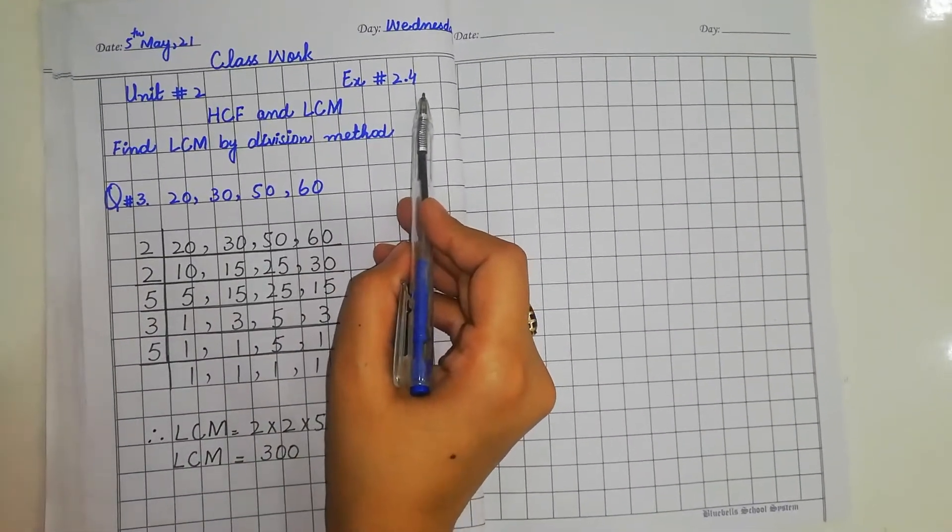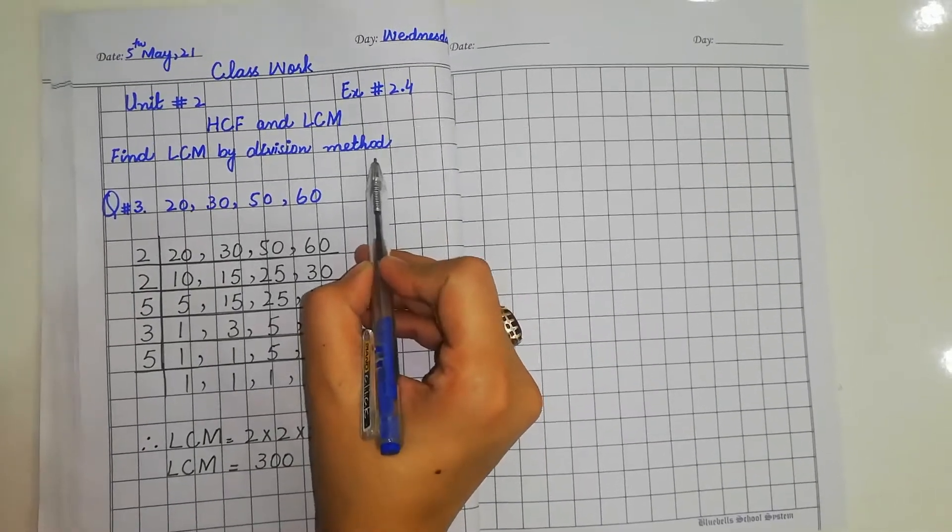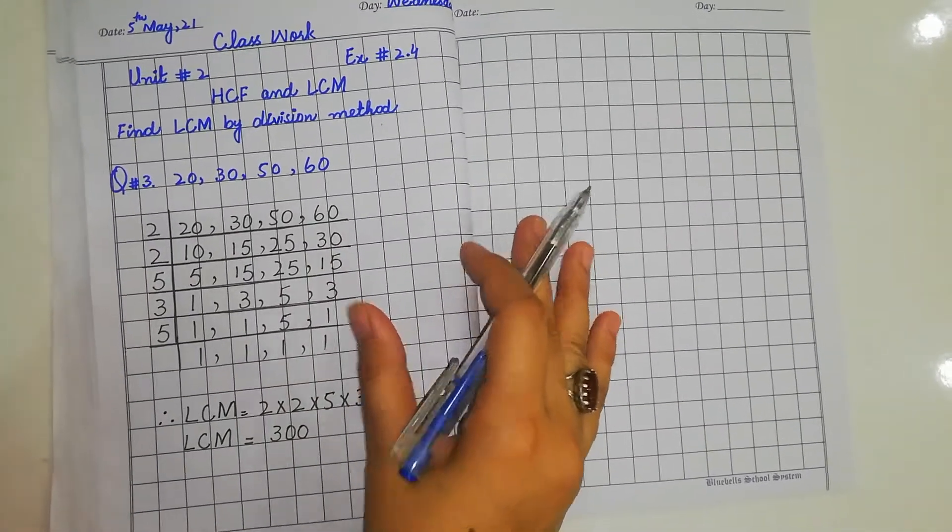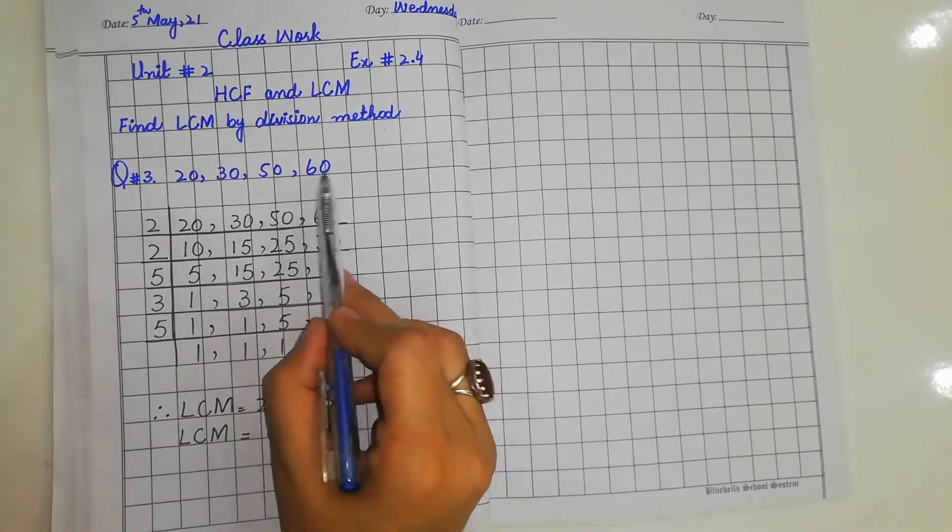In exercise number 2.4, we are finding LCM by division method. Question number 3 is 20, 30, 50, and 60.